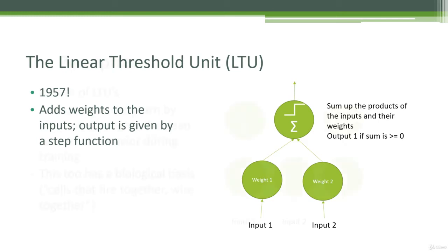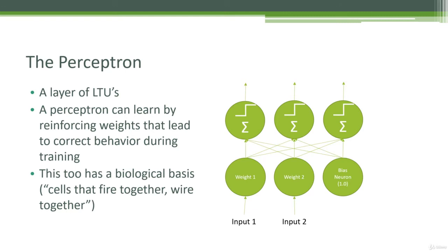So let's build upon that even further, and we'll create something called the perceptron, and a perceptron is just a layer of multiple linear threshold units. Now we're starting to get into things that can actually learn. By reinforcing weights between these LTUs that produce the behavior we want, we can create a system that learns over time how to produce the desired output. And again, this also is working more toward our growing understanding of how the brain works.